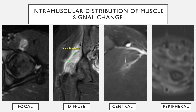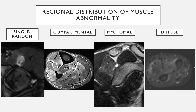Thinking about intramuscular distribution: we can have focal abnormality or diffuse muscle edema involving the entire muscle. We can have it centrally located along the myotendinous junction in a long muscle, or peripherally located along the fascial planes. For regional distribution, it can involve a single or random muscle, a compartment — for example, mainly the peroneal compartment with the posterior compartment spared — or it can be myotomal, as in a ganglion cyst in the spinoglenoid notch where the supraspinatus is spared and only the infraspinatus shows edema. Or it can diffusely involve all muscles.